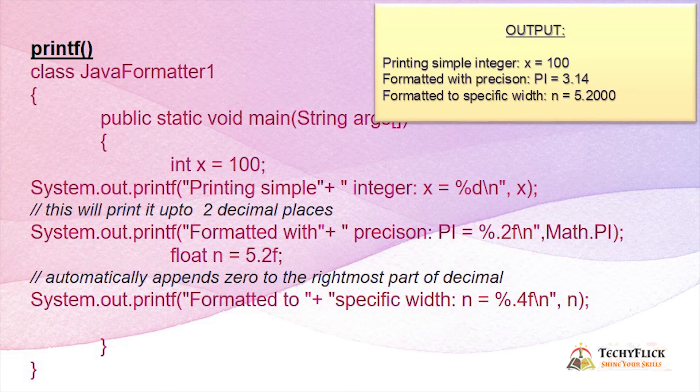Print next line, 2 decimal places. System.out.printf "Formatted with precision: PI" - that means PI value 3.14. That means PI value, that means floating point printf .2f point 2 numbers - that is 3.14. This is method Math.PI. Next value declare: float n equals 5.2f, so 5.2.